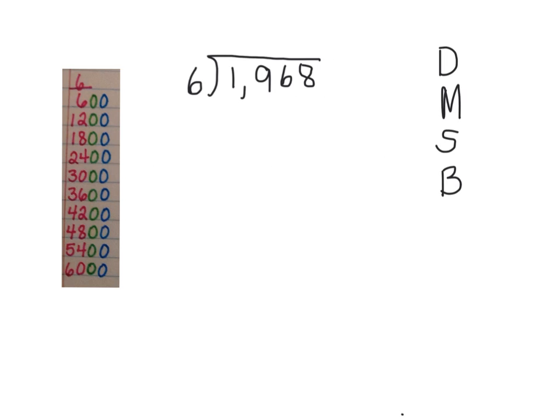Our first example is 1,968 divided by 6. I have listed my friendly numbers for 6 over here to help me and I have listed the Dirty Monkeys Smell Bad acronym to help me remember all the steps of the division process.